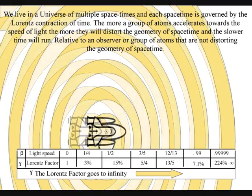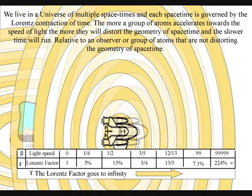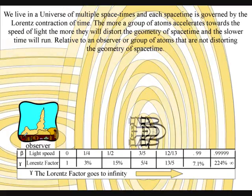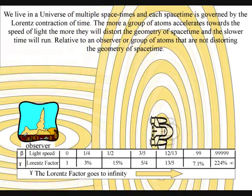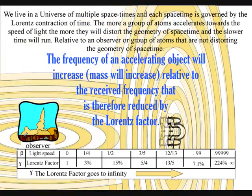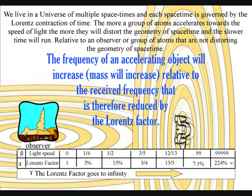We have time dilation for an object accelerating towards the speed of light, and gravitational time dilation around objects of great mass, because the greater the momentum, the shorter the wavelength, and the higher the frequency.